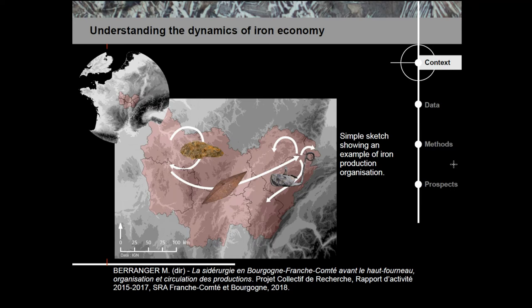The production of iron necessitates numerous steps and can be done in multiple places. I put this map as an example to see that an ore extracted here can be transformed multiple times before becoming the final object. By studying the organization and dynamics of this process, we study the economy of past societies.